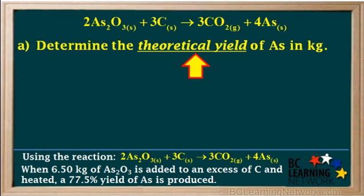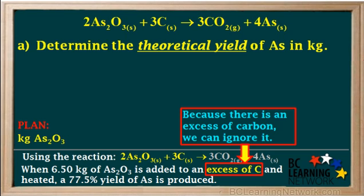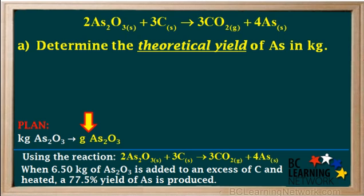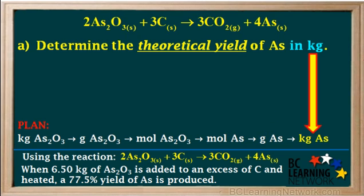First we'll determine the theoretical yield using the procedure we use for all stoichiometry problems. We'll create a plan. We're given the kilograms of As2O3, so we start with that. When we're told that a reactant is in excess, we know we have more than enough of it, so we can ignore the carbon because it's in excess. Our first step is to convert kilograms of As2O3 to grams, then grams of As2O3 to moles of As2O3. We're asked for the theoretical yield of arsenic, so we convert moles of As2O3 to moles of arsenic, then moles of arsenic to grams, and because we're asked for the yield in kilograms, we convert grams of arsenic to kilograms.